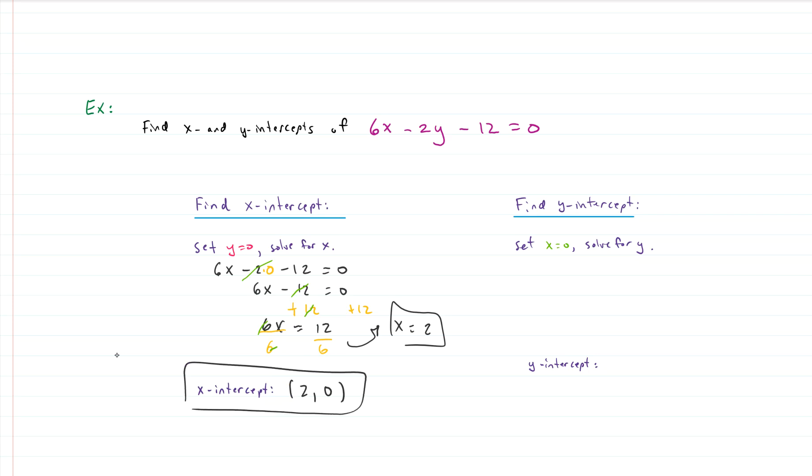And we can do a similar thing for the y-intercept. So to find the y-intercept, we need to set x equal to zero and solve for y. Let's write down our problem: 6x minus 2y minus 12 equals zero.